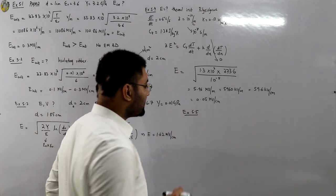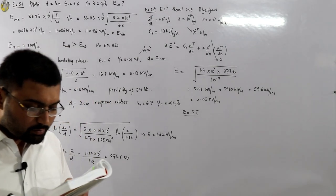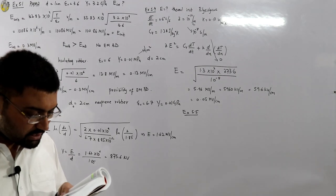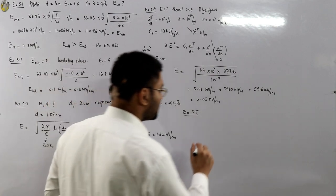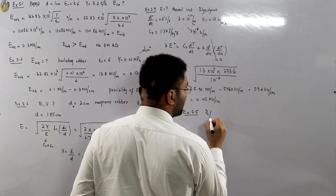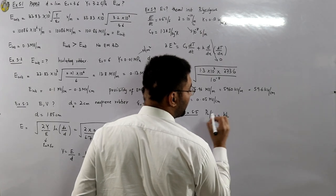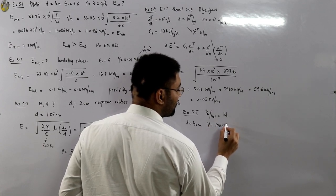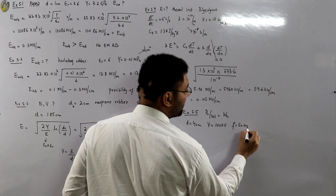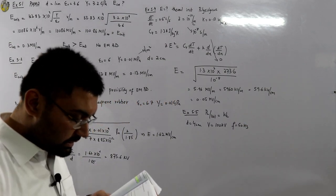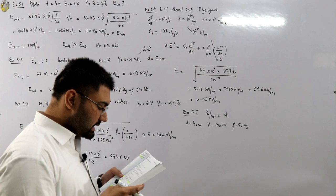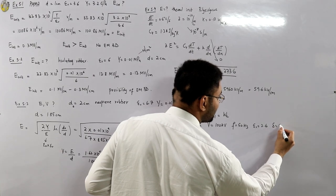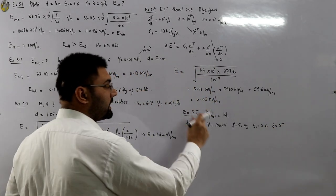Example 5.5 asks to find the power loss per meter cube in polystyrene between two uniform field electrodes separated by 4 cm. The applied voltage is 100 kV at a frequency of 50 Hz. The relative permittivity is 2.6 and the loss angle δ is 5 degrees.